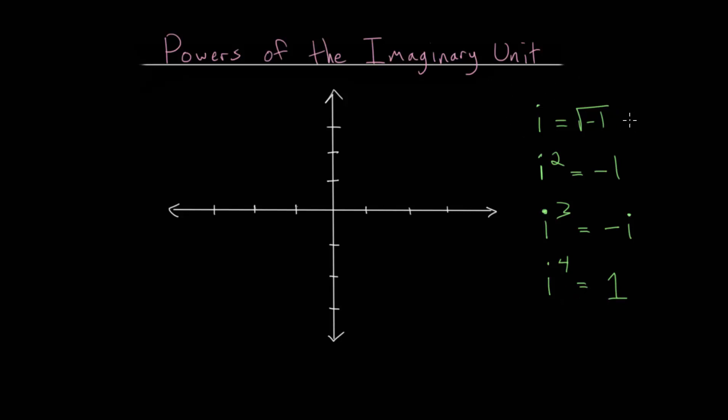For instance, i to the fifth power is just equal to i. i to the sixth power is the same thing as i squared, which is negative one. i to the seventh power is the same thing as i cubed, which is just the opposite of i. And i to the eighth power is just one, and that's the same as i to the fourth.